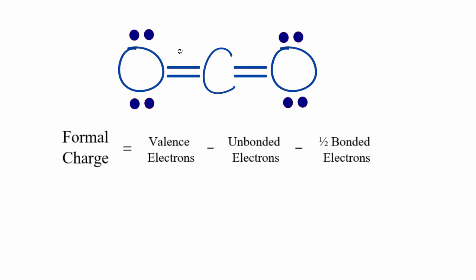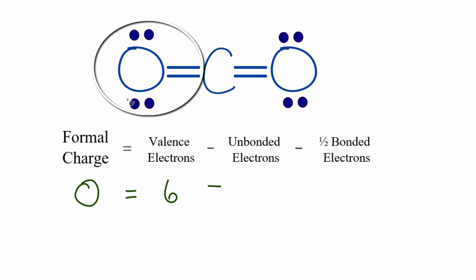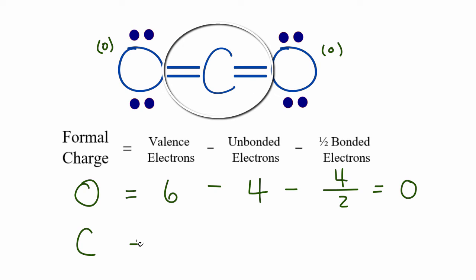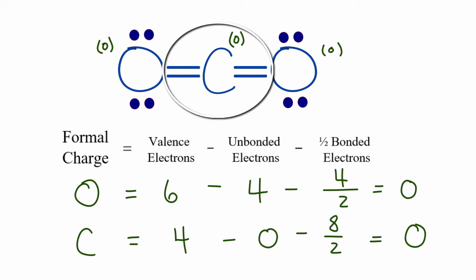For CO₂, starting with the oxygen: six valence electrons minus four unbonded electrons, minus four bonded electrons divided by two. Six minus four minus two equals zero, so the formal charge on each oxygen is zero — and since the molecule is symmetrical we apply the same result to the other oxygen. For the central carbon: four valence electrons, zero unbonded, and eight bonded electrons. Four minus zero minus four equals zero, so the formal charge on carbon is also zero.